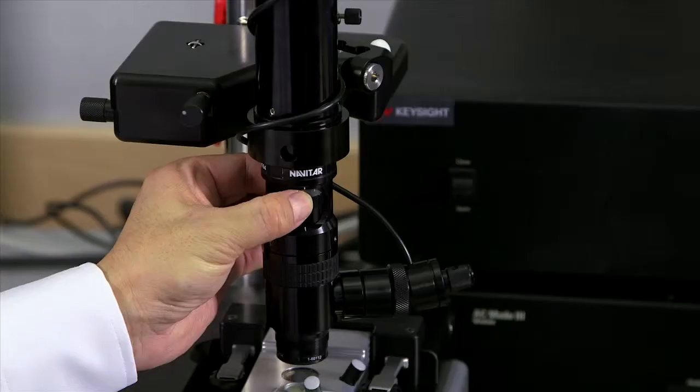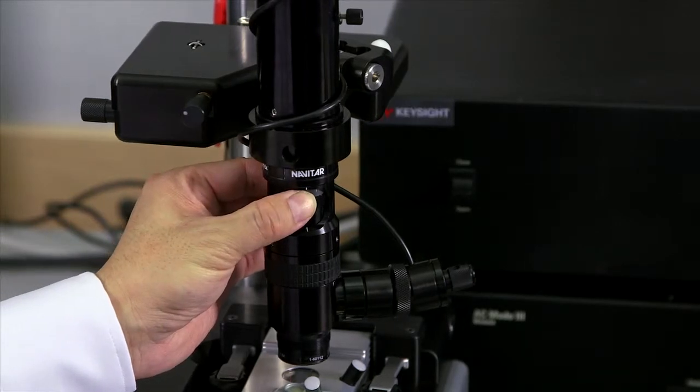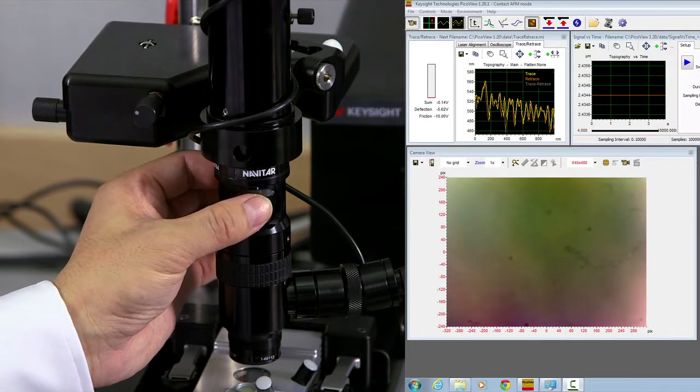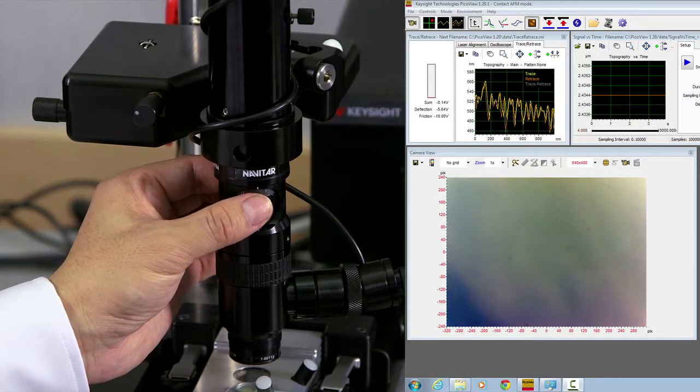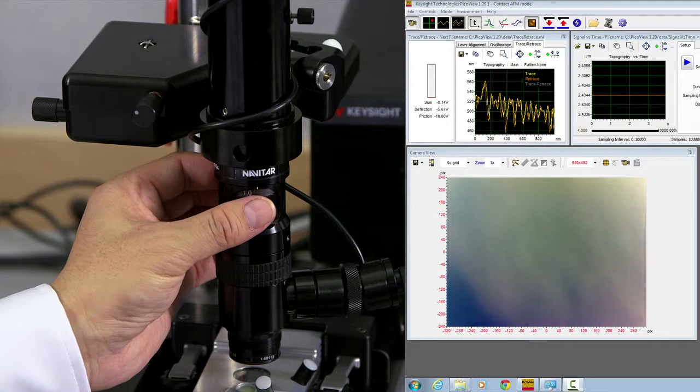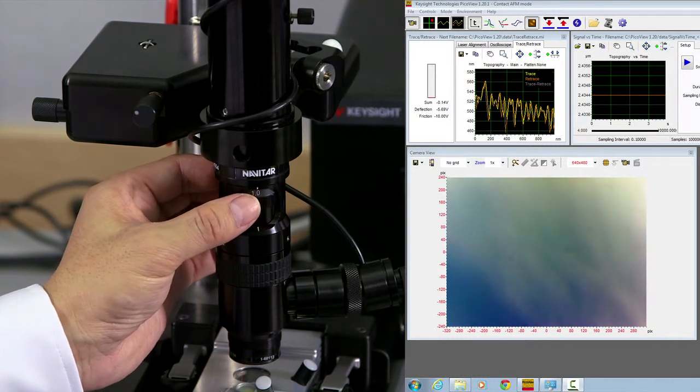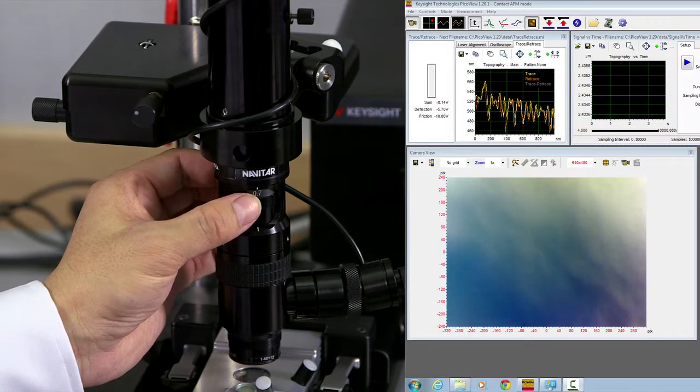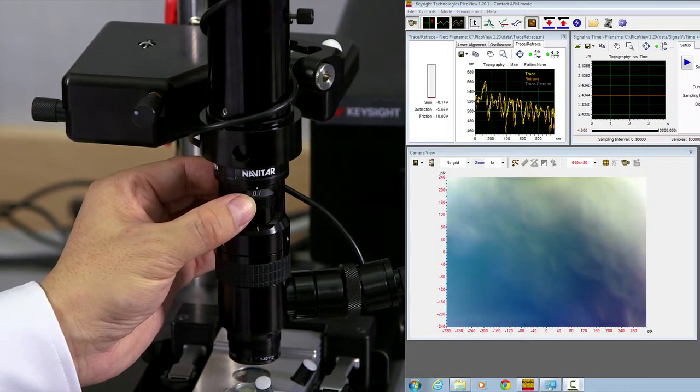You rotate the zoom ring. At the same time, look at the computer screen, look at the optical microscope view. And if you cannot find out which direction is the zoom out, you can look at the brightness of the image. Normally when you zoom out, the image becomes brighter. Zoom all the way out to its stop position.